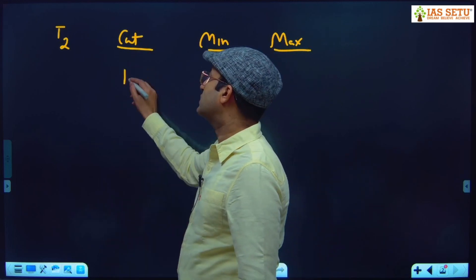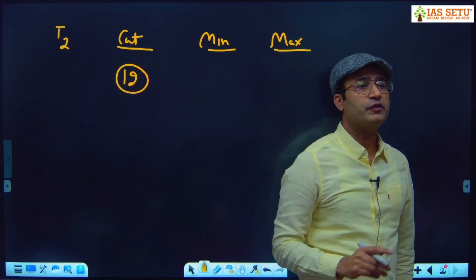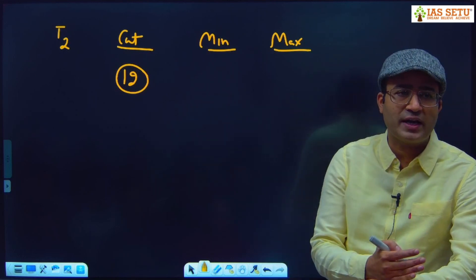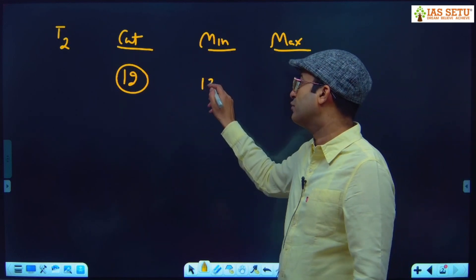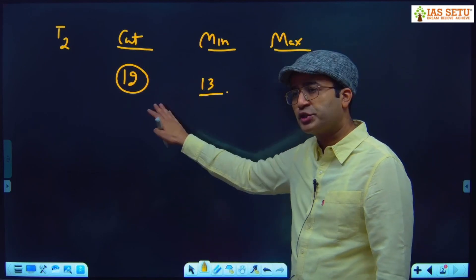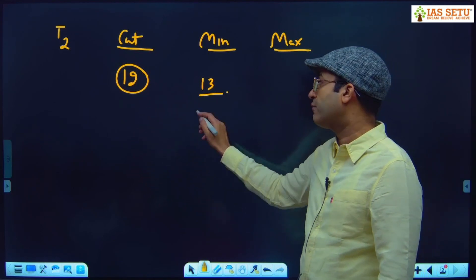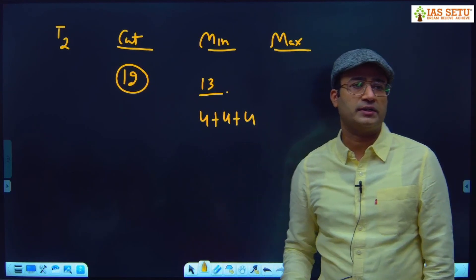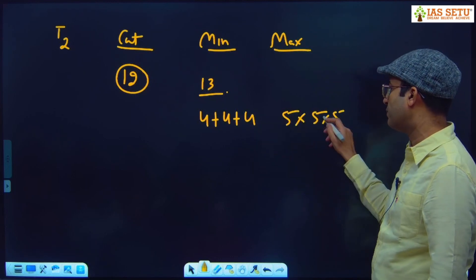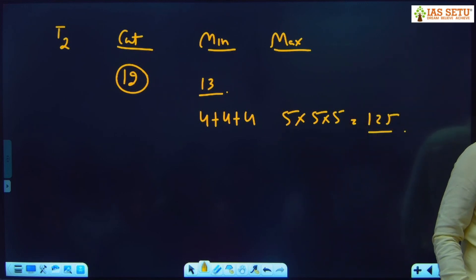For Type 2, when the number of cuts is an exact multiple of 3 — like 12 cuts — minimum pieces is simple: make all cuts on 1 axis, so 12 cuts give you 13 minimum pieces. For maximum pieces, the distribution must be uniform: 4 cuts on x, 4 cuts on y, 4 cuts on z. Each gives 5 pieces, so 5 × 5 × 5 = 125. With 12 cuts, maximum pieces = 125.